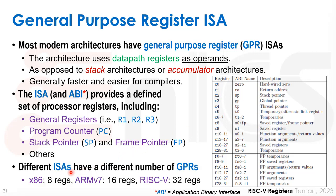There is no magic number for the right number of registers. Different architectures have different counts: in x86, early versions had 8 registers; early ARM had 16 registers; RISC-V has 32 base integer registers, plus additional floating point registers if the floating point extension is implemented.